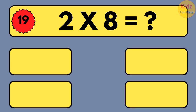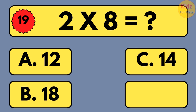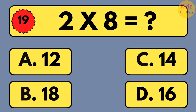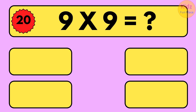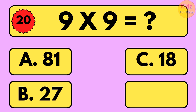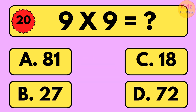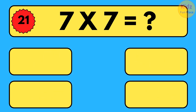2 times 8 is equal to what? 2 times 8 is equal to 16. 9 times 9 is equal to what? 9 times 9 is equal to 81. 7 times 7 is equal to what?